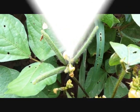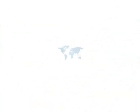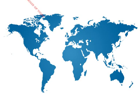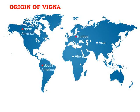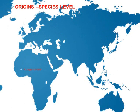The Vigna genus was first originated in Asia and Africa and is widely spread to Europe, South America, and North America. Vigna angulata originated in Africa, and Vigna radiata originated in India.